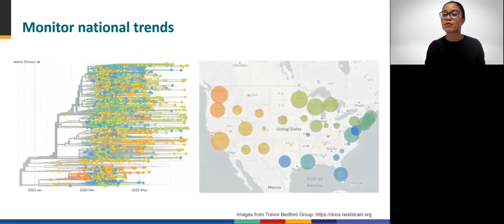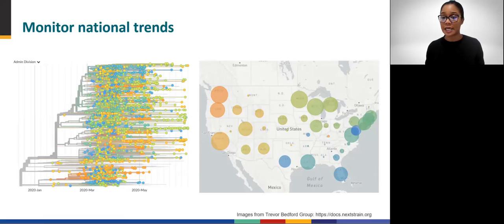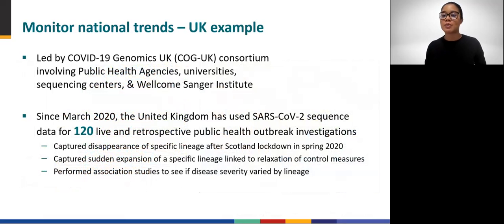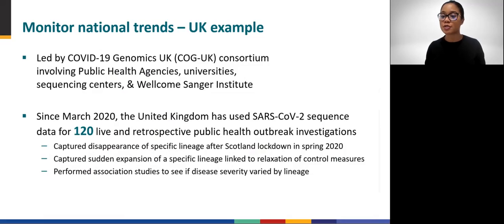At the national level, genome sequence data are important for monitoring the ongoing evolution of SARS-CoV-2. This is an image from Nextstrain.org, an open-source project created at the University of Washington; the numbers of available sequences vary by state, but Nextstrain can display them all in a single phylogenetic tree. A prime example of national trend monitoring is the work of the COVID-19 Genomics UK Consortium, or COG-UK, involving public health agencies, universities, and sequencing centers such as the Wellcome Sanger Institute. Since March 2020, over 100,000 SARS-CoV-2 genomes have been sequenced and applied to more than 100 public health outbreak investigations. COG-UK has documented the disappearance of specific viral strains following lockdown and the explosion of viral strains following relaxation of control measures.